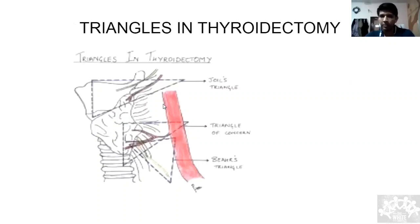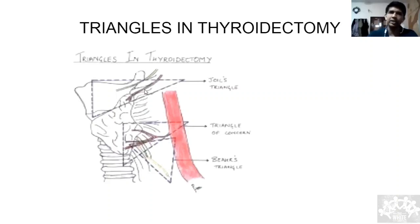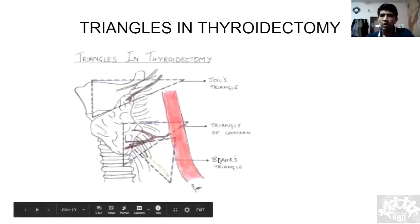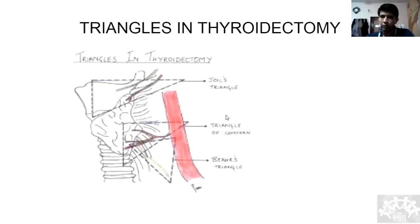The triangles — Joll's triangle, Beahr's triangle, triangle of concern, and Riddle's triangle — are purely theoretical for viva purposes. Please read up about them independently.